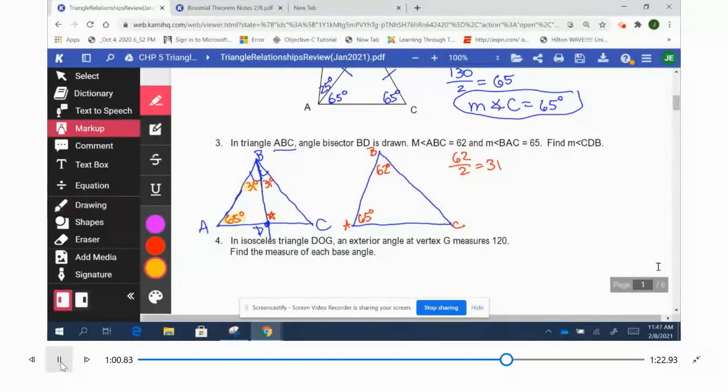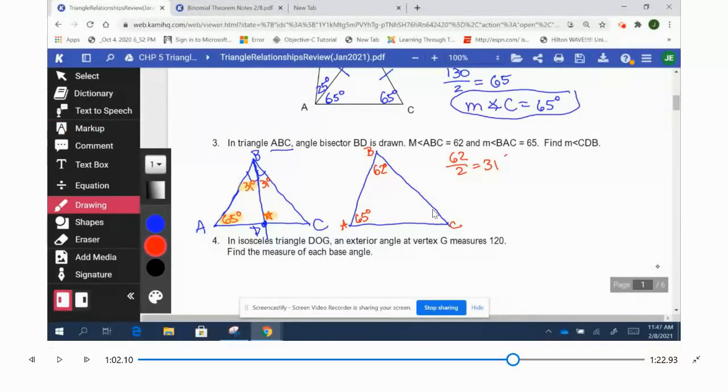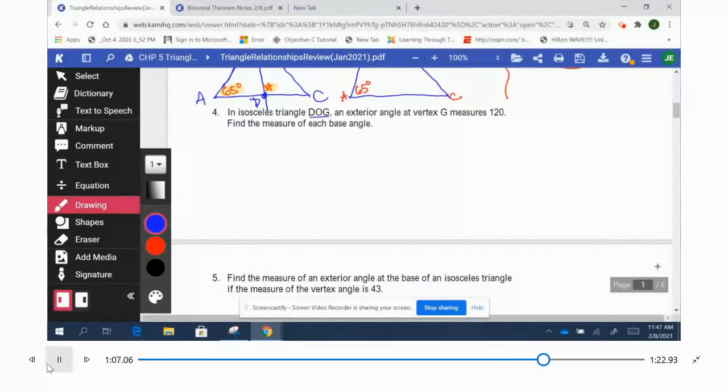This angle would be 127. We've used up 127, so this angle would be 53. So 53 and 31 is 84, then subtract from 180 and we'll get 96. Either way, I used exterior angles to get 96 or could use interior angles of a triangle to get 96.